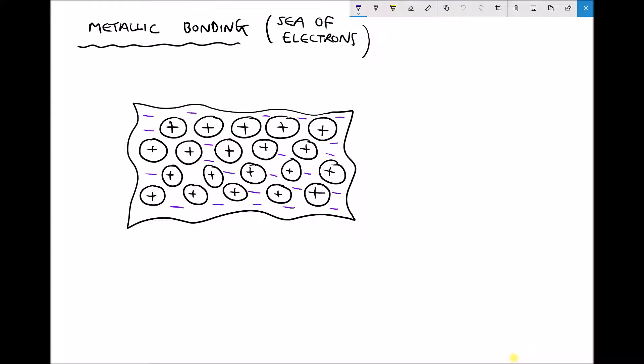As we look at the piece of material that's pictured, what we notice is that there's positive metal ions shown in black, and they're surrounded by electrons shown in blue.